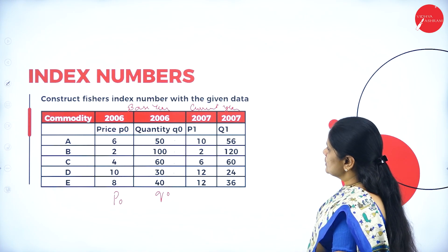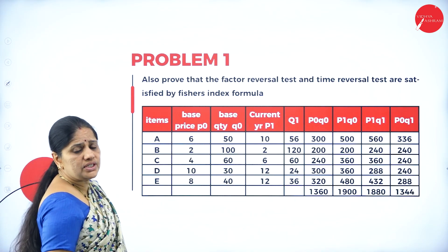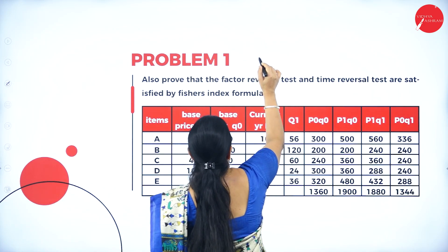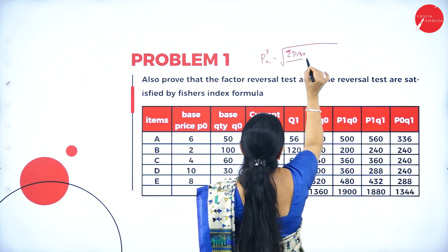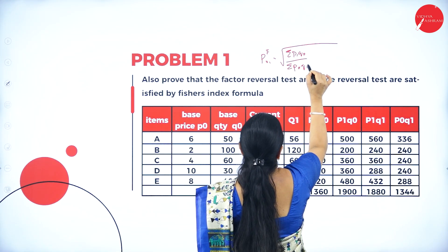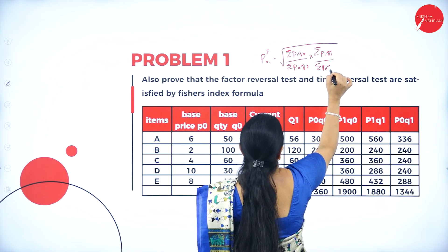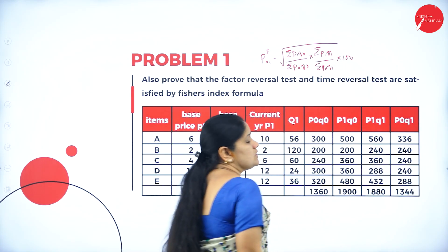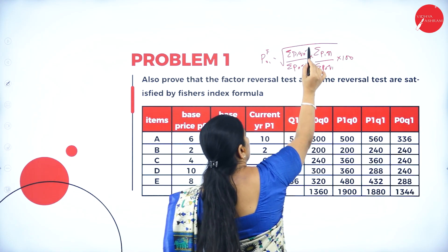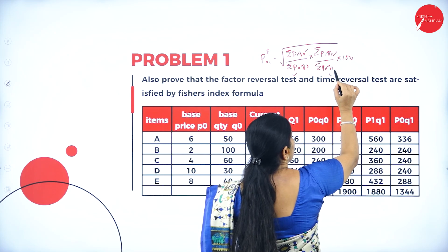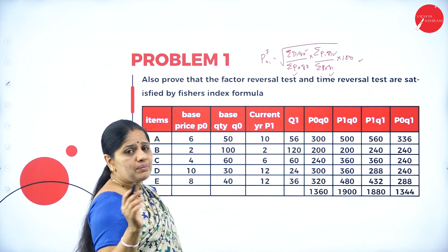Now, what is the formula for Fisher's price index number? Fisher's index number PF01 = √[(σP1Q0 / σP0Q0) × (σP1Q1 / σP0Q1)] × 100. This is the formula for Fisher's ideal index number. We will have to calculate σP1Q0, σP0Q0, σP1Q1, and σP0Q1, then take the square root and multiply by 100.